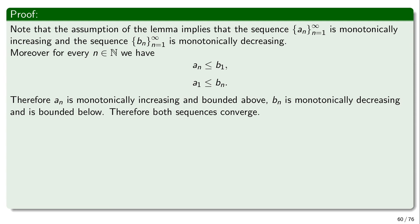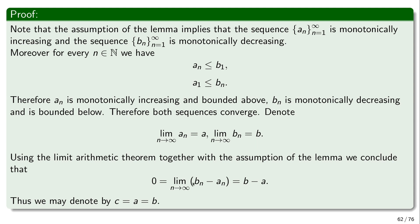The Monotone Convergence Theorem relies on the completeness property of the real numbers — I cannot emphasize this enough, because whenever we dig deep enough in analysis we always encounter the completeness property, which is of crucial importance. Now we apply the Limit Arithmetic Theorem: a_n converges to some value a, and b_n converges to some value b. From the lemma's assumption, the limit of b_n minus a_n is zero, but limit arithmetic gives this limit as b minus a. Therefore b equals a, and we can call this common limit c.